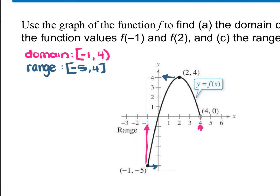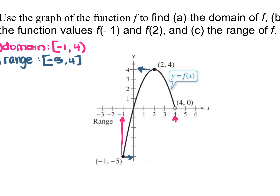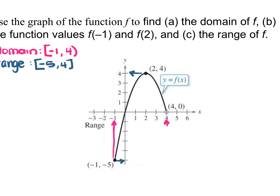So that was finding the domain, which are our x-values being covered, and the range, which are the y-values being covered. Next we have to find f of negative 1 and f of 2. To find f of negative 1, we look for the ordered pair where x is negative 1. Whatever the y-value is will be f of negative 1. The ordered pair negative 1, negative 5 has x equals negative 1, so f of negative 1 equals negative 5 — you're literally just pulling the y-value out.